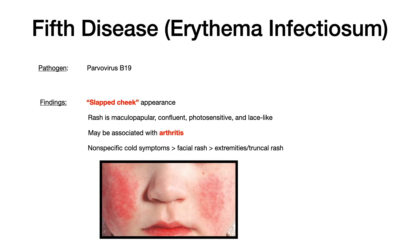Let's start with fifth disease, also known as erythema infectiosum. The pathogen that causes fifth disease is parvovirus B19. The very high yield appearance you're going to see on your exam is what's known as a slapped cheek appearance. It quite literally looks like somebody was slapped in the face — there's redness on the cheeks. It's a maculopapular, confluent, photosensitive, and lace-like rash on the bilateral cheeks. This may or may not be associated with arthritis.